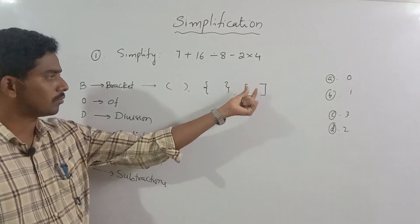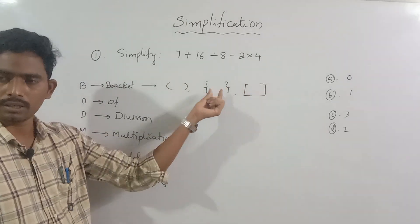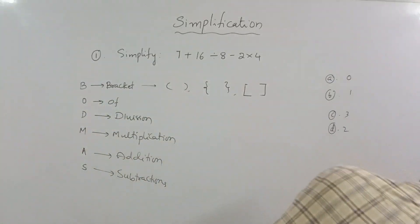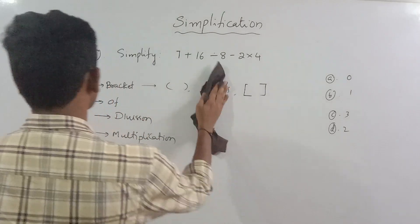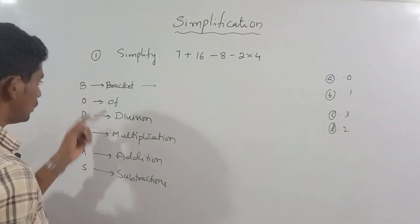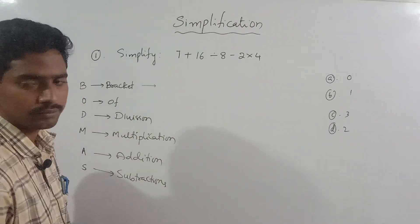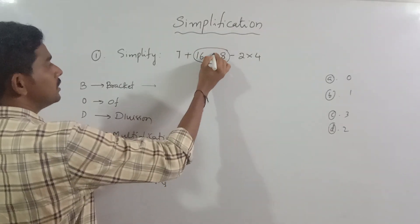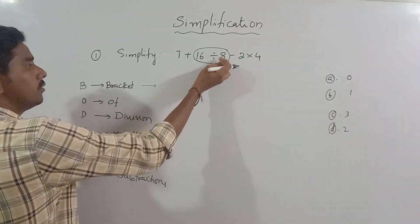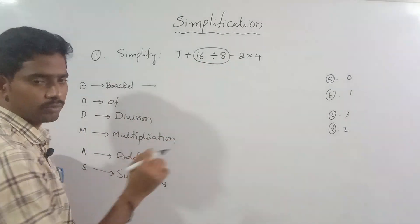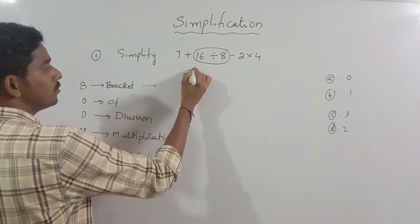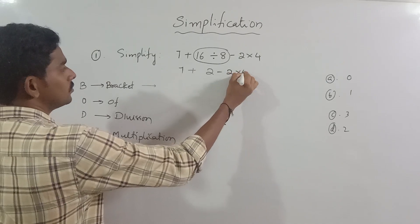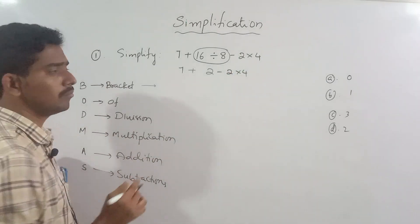How many brackets are there? Then there is a bracket, then there is a bracket, then there is a bar. So we will do this. Not the brackets or half — then there is a division. Divisions are only 16 to 8. 16 by 8 is 2. Then we have a division. Divisions are completed.